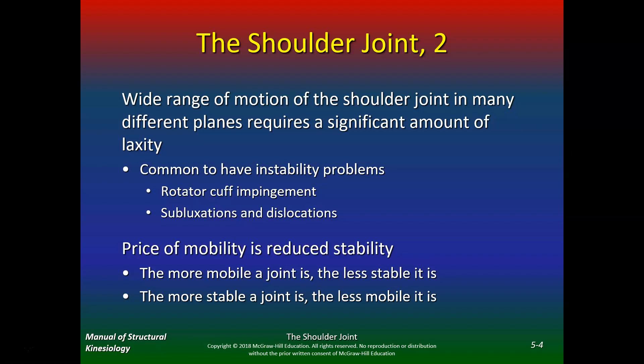You can get rotator cuff impingement, subluxations, and dislocations. The price of mobility is reduced stability. In week one and two, we talked about how each joint is either mobile or stable. Since the shoulder joint is so mobile, you get reduced stability. The more mobile a joint is, the less stable it is. And the more stable a joint, such as the hip, the less mobile it is.